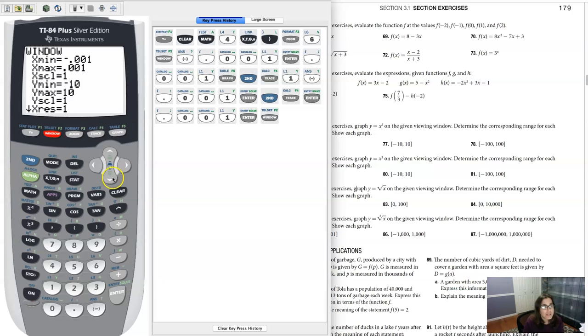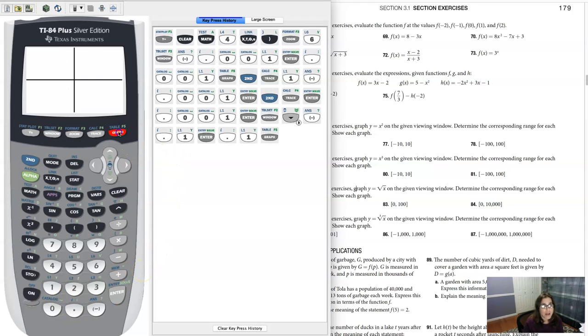All right. So for my window, let me scroll down here and change this out. Let me make this negative 0.1 and positive 0.1 because those were the numbers we were getting. Let me hit graph and now I can actually see what's going on.